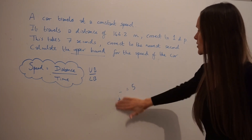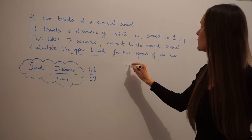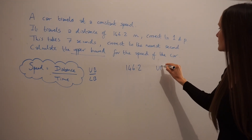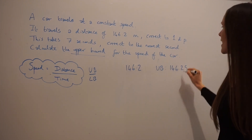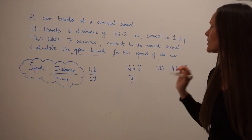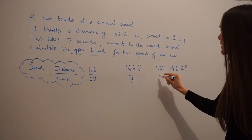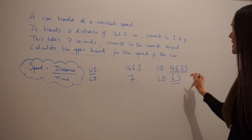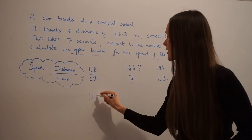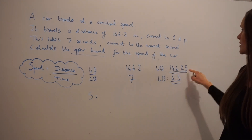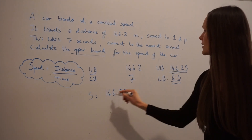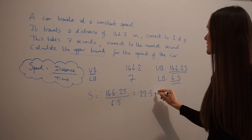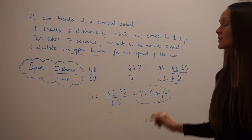So let's look at the question again. It says the distance is 146.2 metres correct to one decimal place. So the upper bound for distance would be 146.25. Then if I take the time, so that was 7 seconds, but this time I need to take the lower bound, so that would be 6.5. So now I have the upper bound for the distance and the lower bound for the time. To work out speed, distance divided by time — so 146.25 divided by 6.5 — which gives you 22.5 metres per second. So that is the upper bound for the speed of the car.